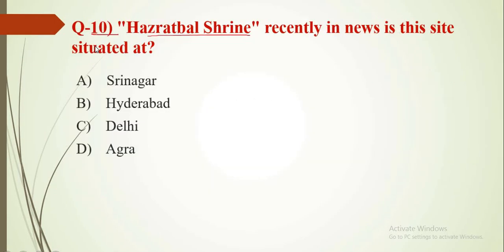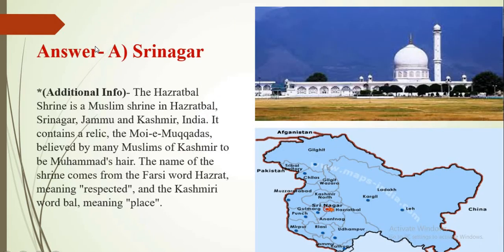Question number 10, the last of the series: The Hazratbal Shrine recently in the news — where is it situated? Choose the correct option. It is situated in Srinagar, so the answer is A — Srinagar. An image of the shrine is shown and it is located in Srinagar. The name is derived from the Farsi word 'Hazrat' meaning 'respected' and the Kashmiri word 'Bal' meaning 'place'.